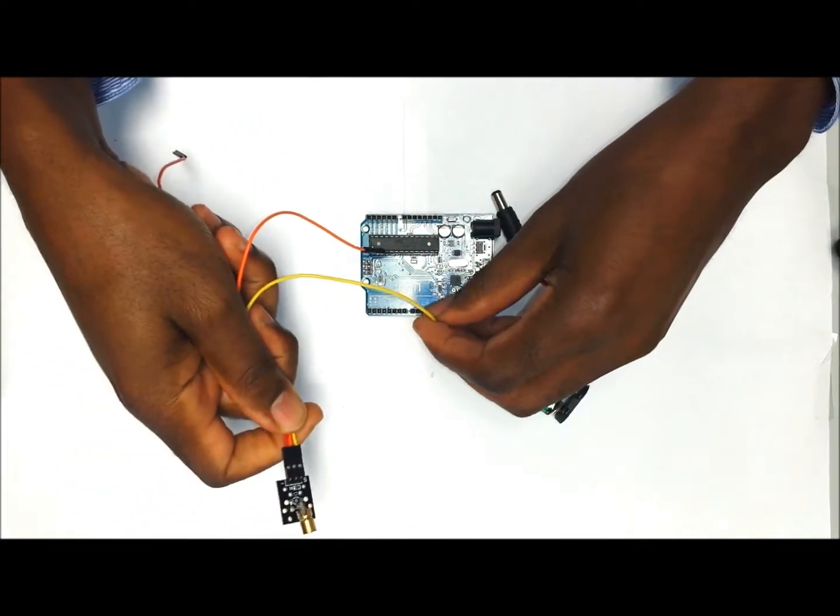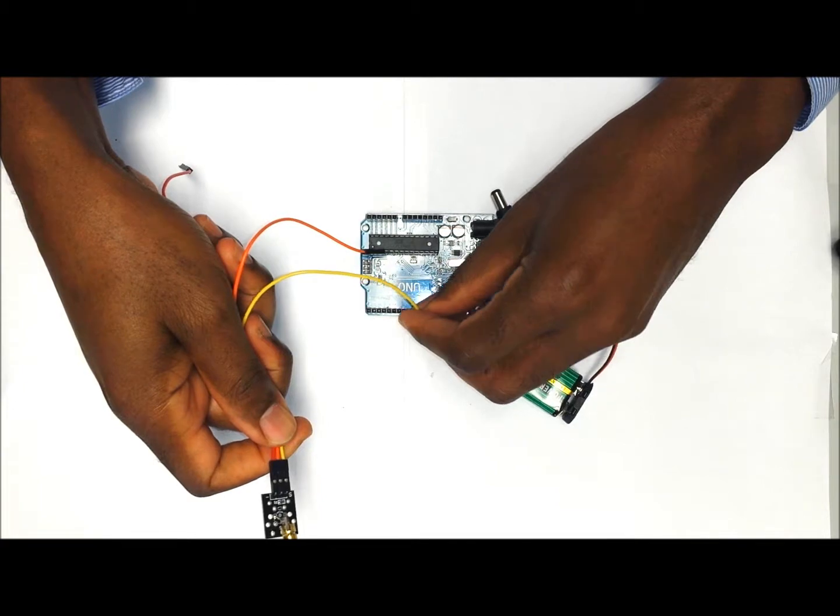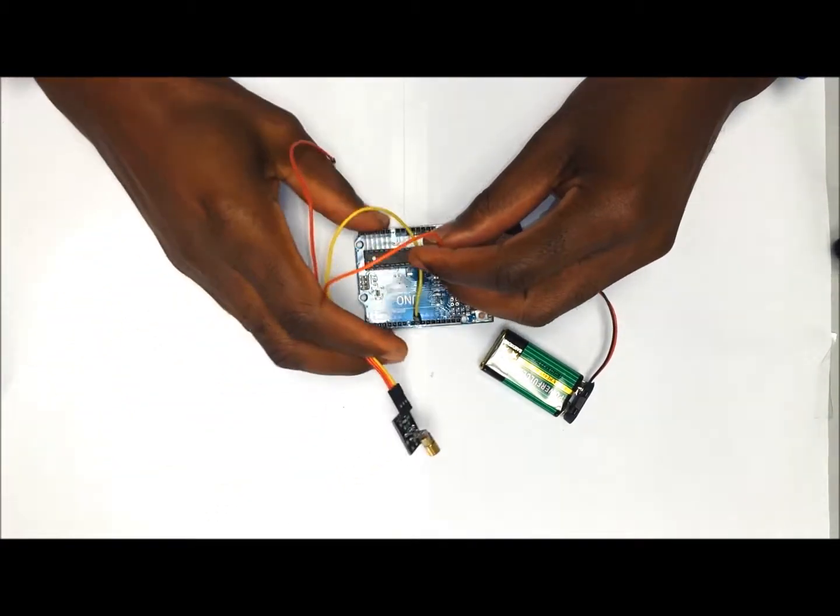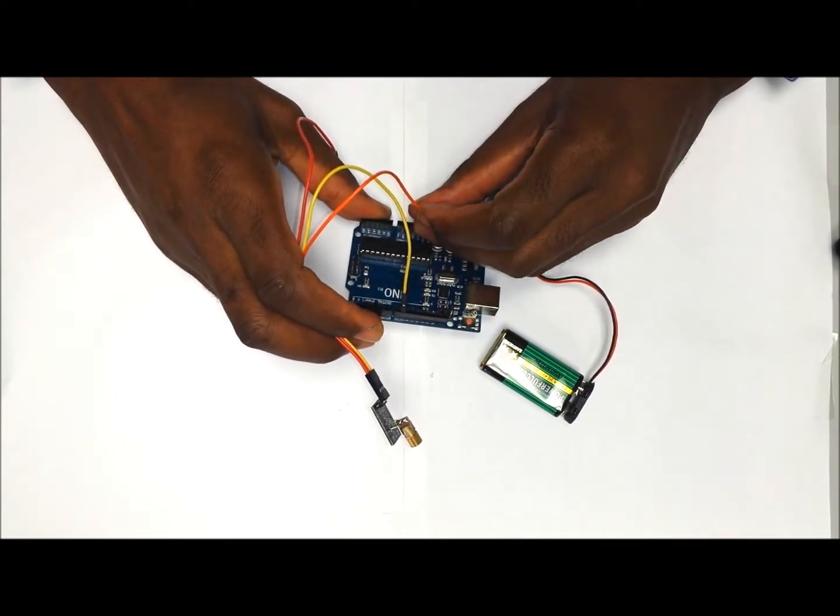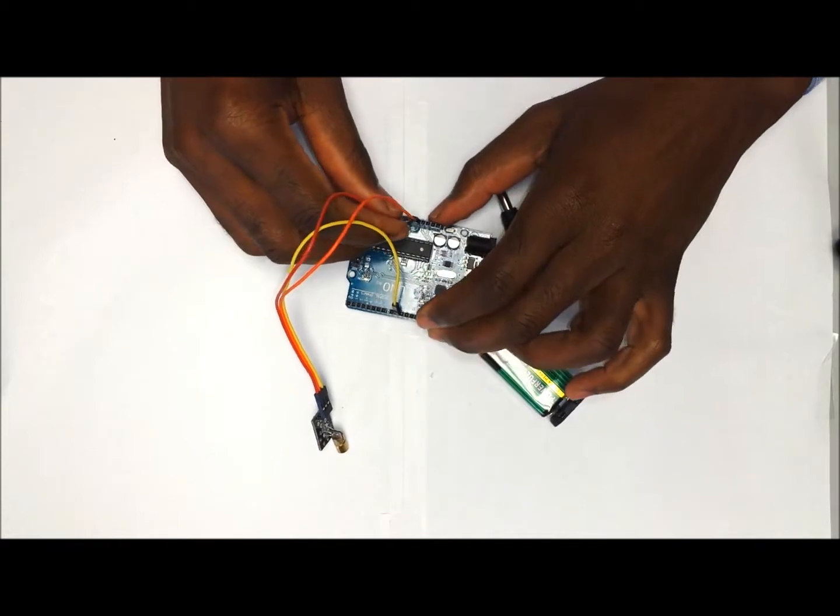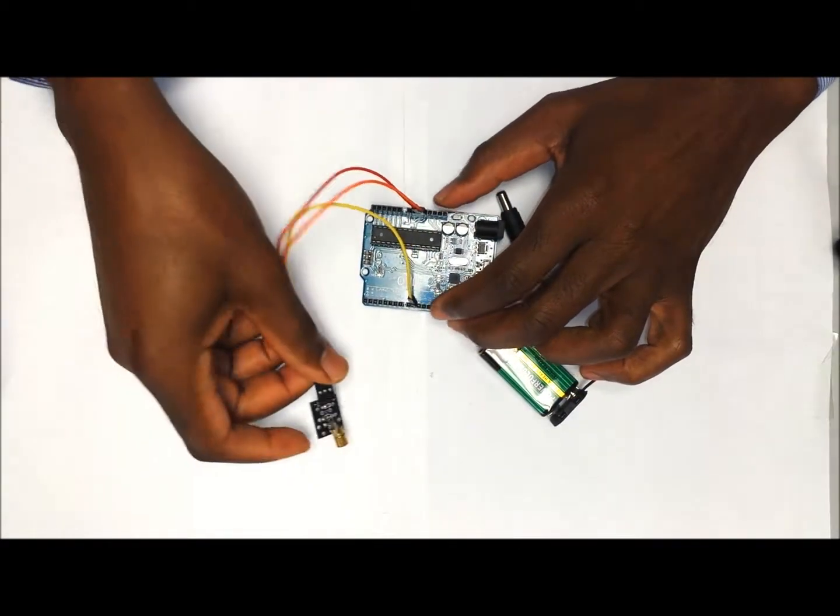The middle wire, which is the voltage, we are going to hook up to five volts on the Arduino, and the remaining wire will go on GND on the Arduino. This completes the hookup for the laser module onto the Arduino.